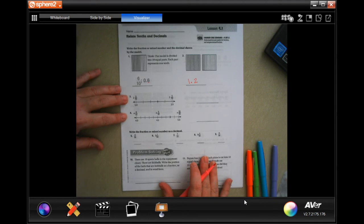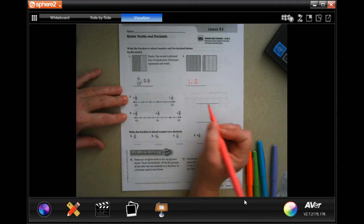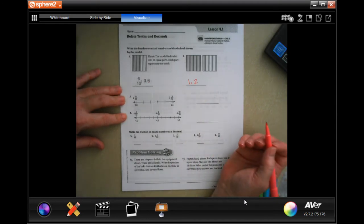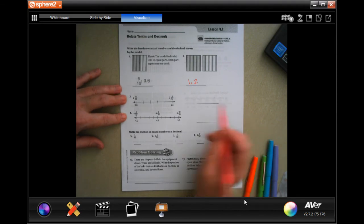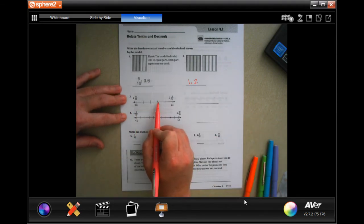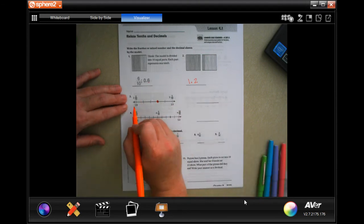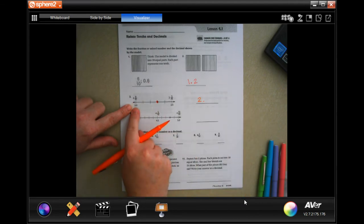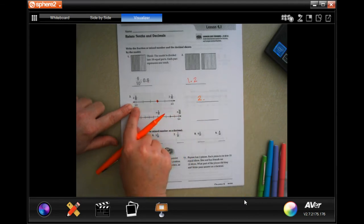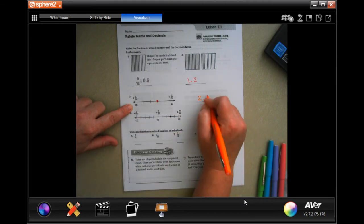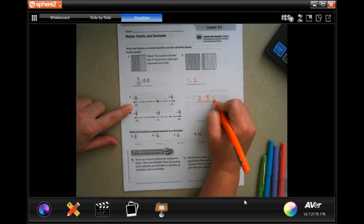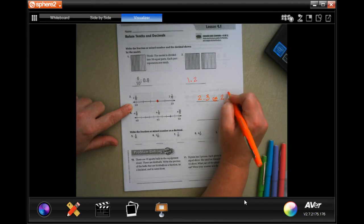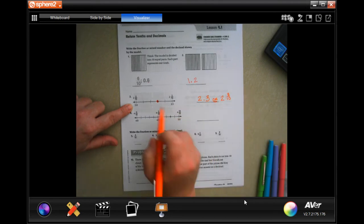So now it wants us to tell them where the dot is. In this case it's right here, so it's gonna be two point three, or two and three tenths.